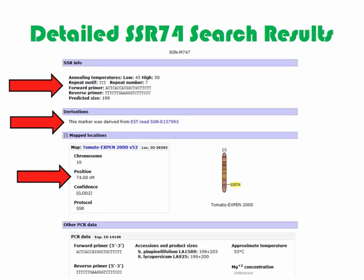The extent of the information provided in the detailed search results depends on what is known about a particular marker. I am using SSR74 as an example of a typical marker on SGN. At the top of the search results, we find information relevant for genotyping SSR74 — for example, low and high annealing temperatures, forward and reverse primers, and predicted product sizes are listed. The approximate map position of SSR74 is visually displayed. We can also learn about the sequence map by clicking on the ESTREADSGN-E157993 link, and learn more about the map by clicking on the tomato xpen2000v52 link.